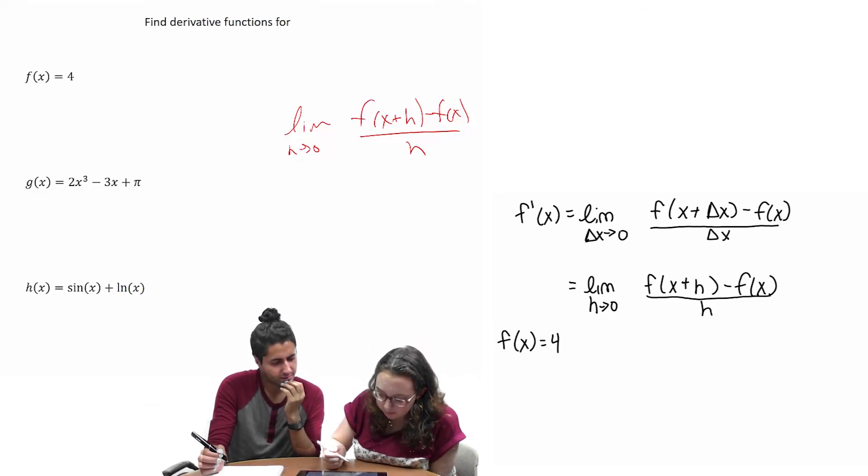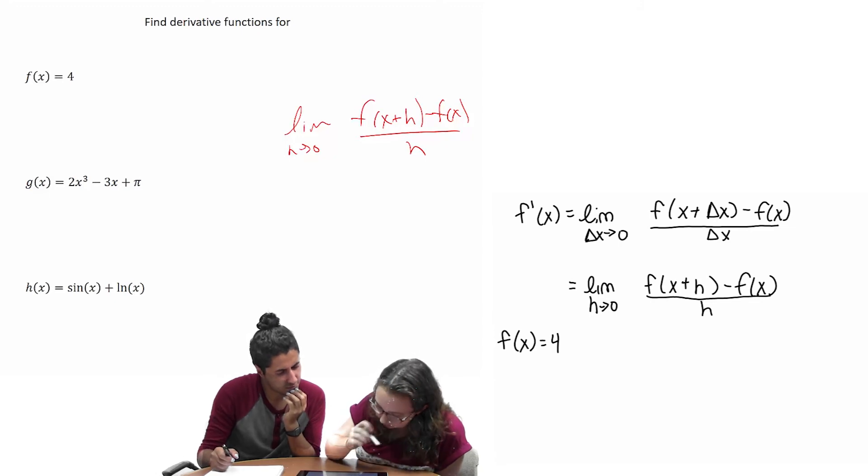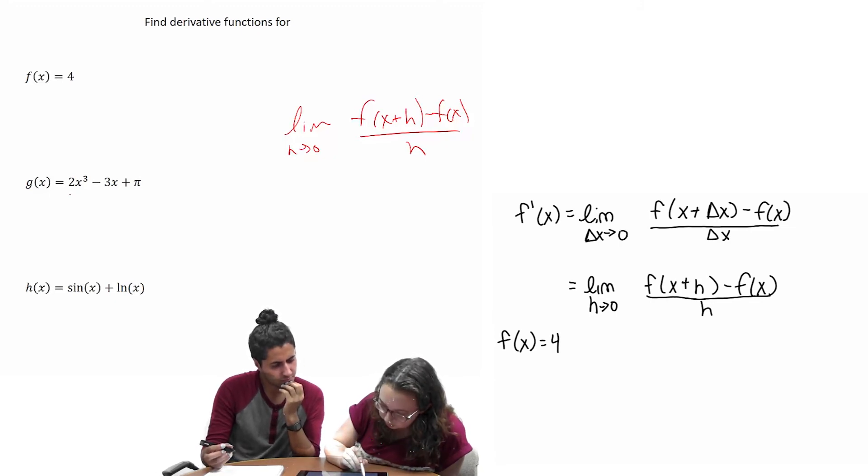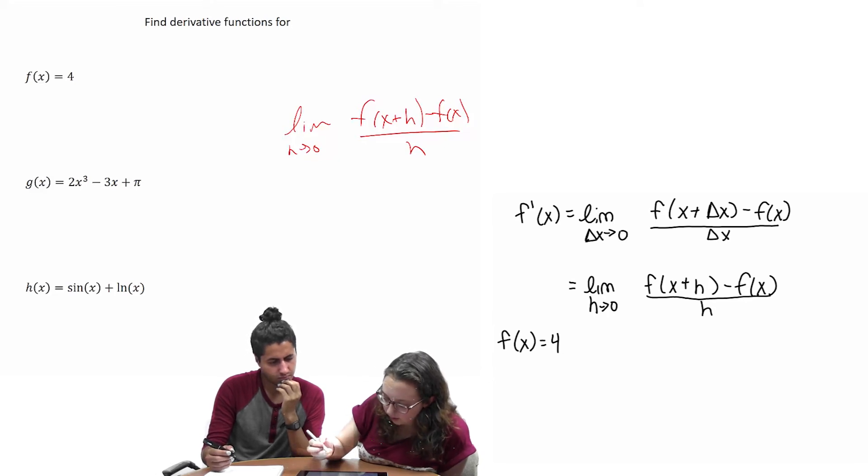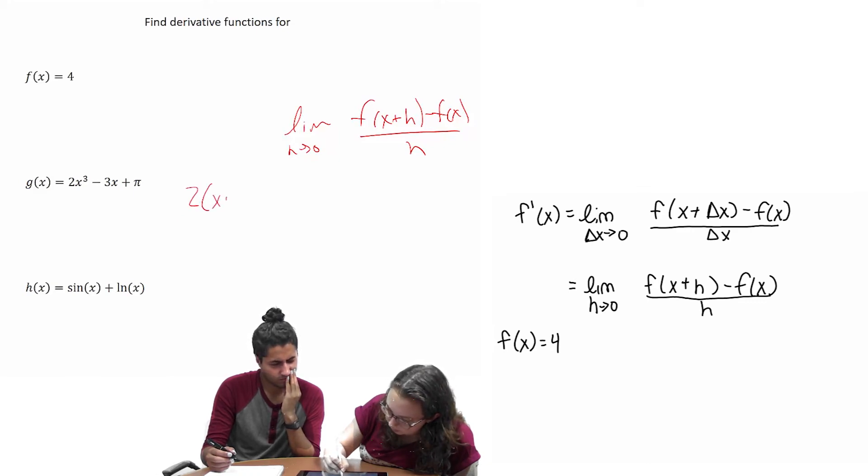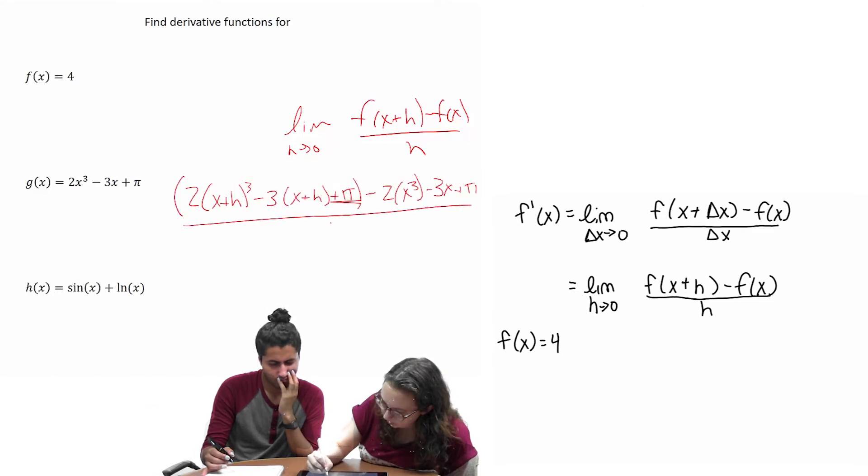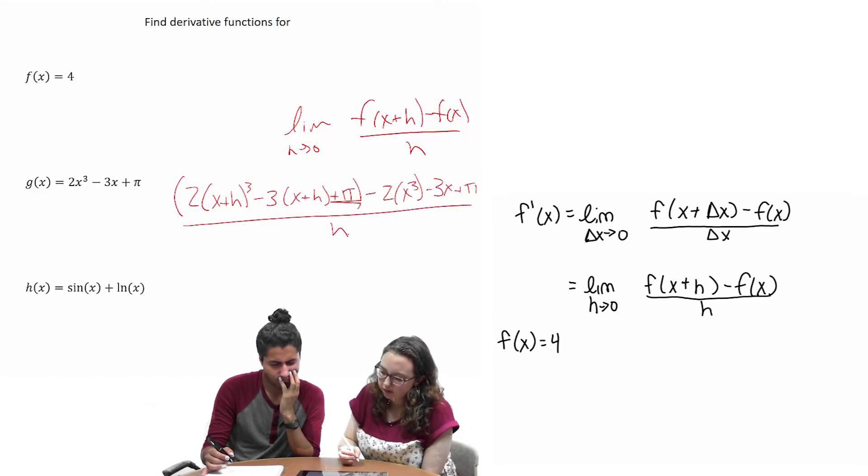That's a good idea. Okay. So, this one is g of x equals 2x cubed minus 3x plus pi. Okay. We'll put that in. It's gonna be a lot. So, if we do... It's a lot.